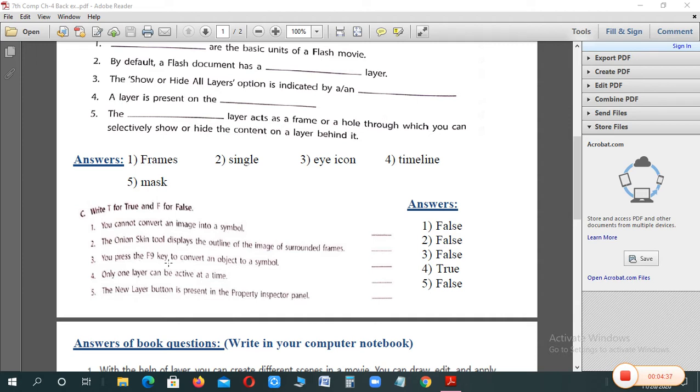You press the F9 key to convert an object to a symbol. If you have a shortcut key to symbol, the shortcut key is F9. That is false. Shortcut key is F8.